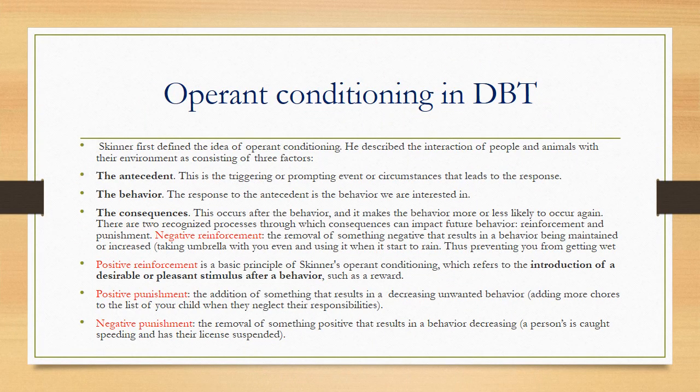Feelings and behaviors arise in response to stimuli — that is classical conditioning — and are reinforced or punished by consequences — that is operant conditioning. Skinner first defined operant conditioning, describing the interaction of people and animals with their environment as consisting of three factors: the antecedent (triggering event or circumstance), the behavior (response to that antecedent), and the consequences. Consequences have four quadrants: negative reinforcement, positive reinforcement, positive punishment, and negative punishment.